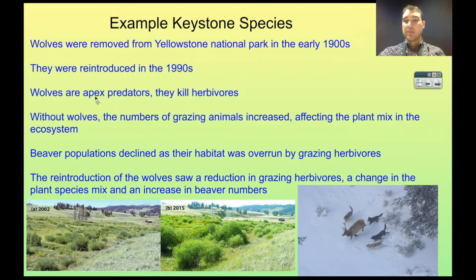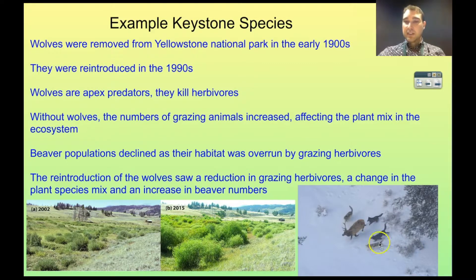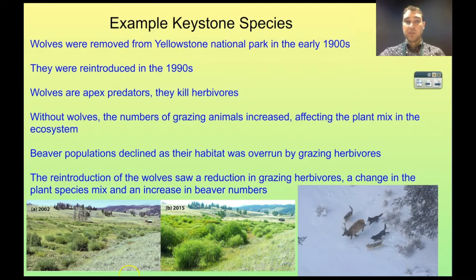Their job is to kill herbivores, usually large herbivores. They might also kill carnivores too — they're predators and eat whatever they can catch. Here's a picture of some wolves from Yellowstone hunting an elk, for example. Elk is one of the large grazing herbivores present in Yellowstone.